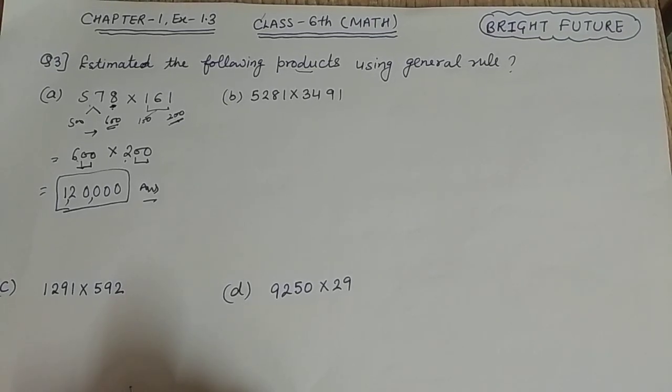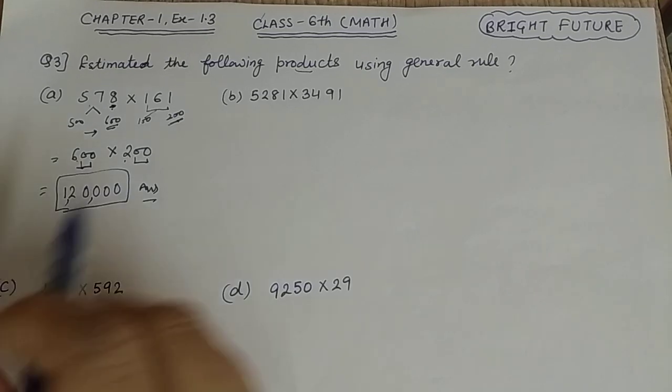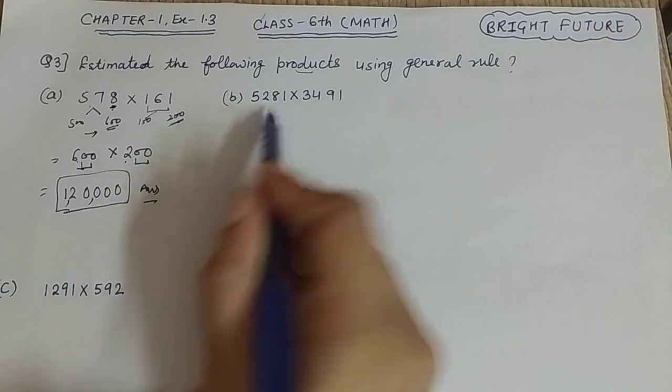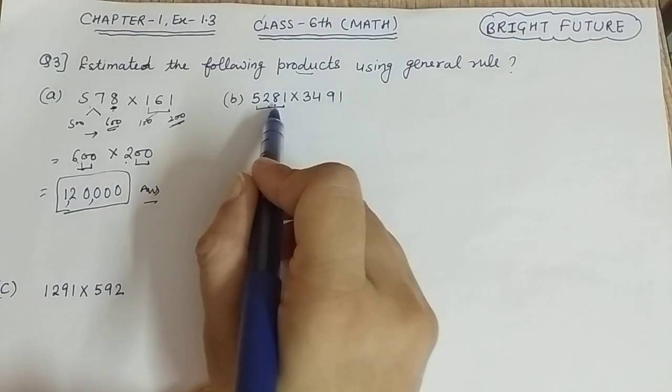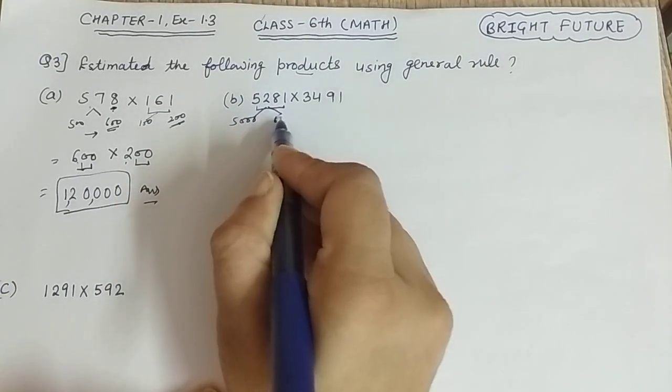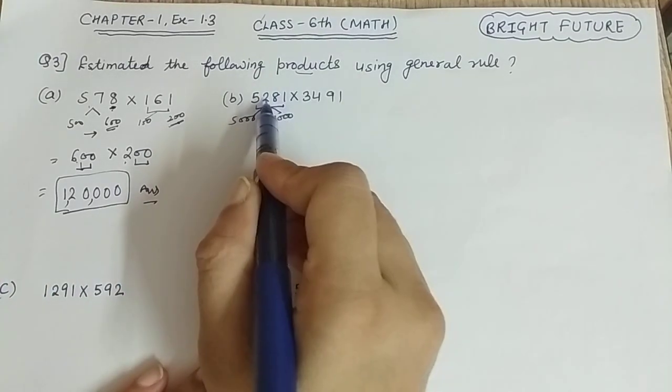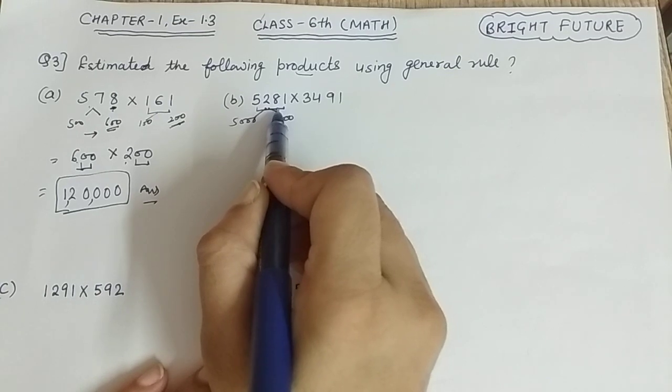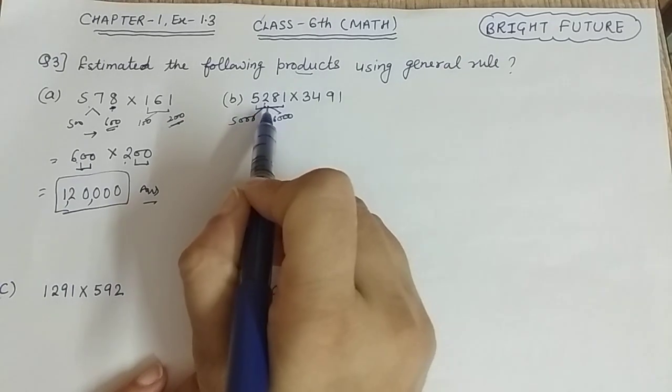Question one and two you can see first, I've done them for rounding off. This is a simple example. Now for part B, we have 5281 times 3491. If you see these numbers, 5281 is around 5,000 or 6,000. You can take it from thousands. If you put 2 and 5, it will be closer to 5.